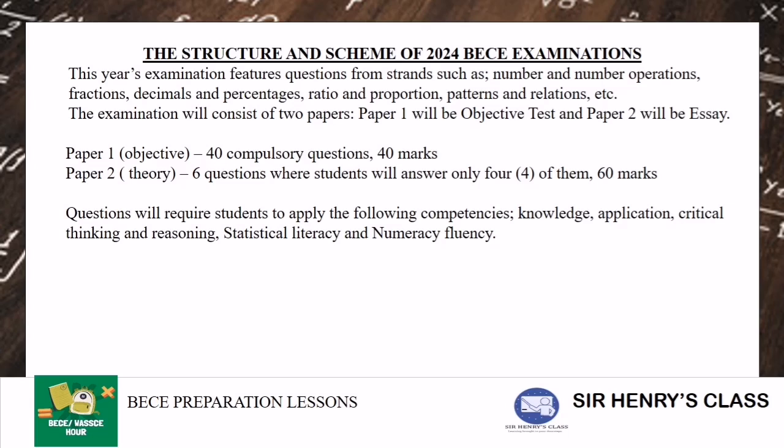So mostly it contains two parts, Paper 1 and Paper 2. Paper 1 is the objective multiple choice, 40 questions. Paper 2 also consists of 6 questions for a student to answer 4 of them, with the section B of Paper 2 carrying 60 marks and Paper 1 carrying 40 marks in all giving us 100 marks.